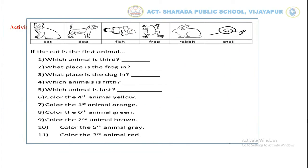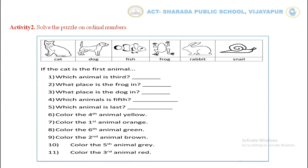Children, look at the picture of animals. Let us solve the first question: which animal is third? First, second, third — so the third animal is fish.